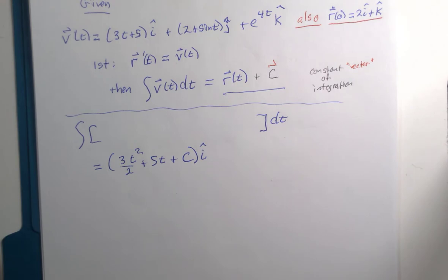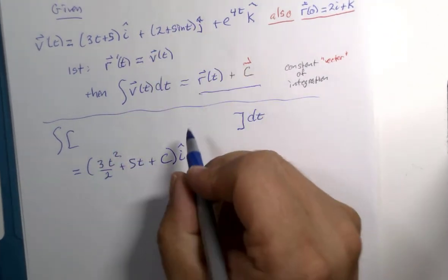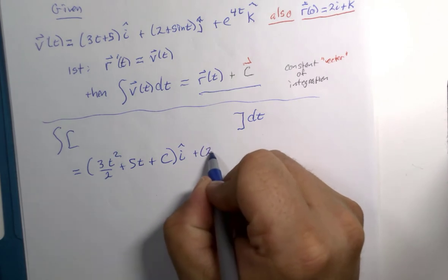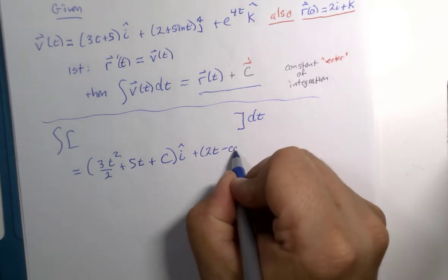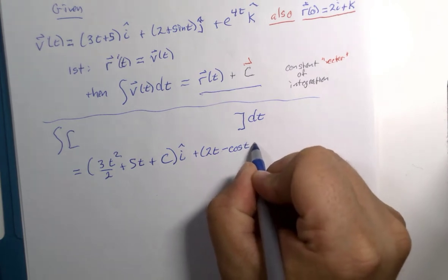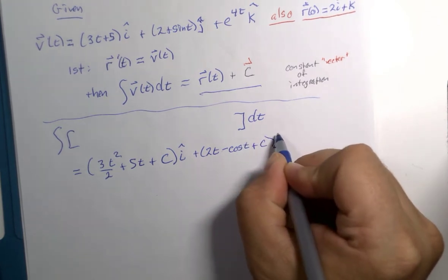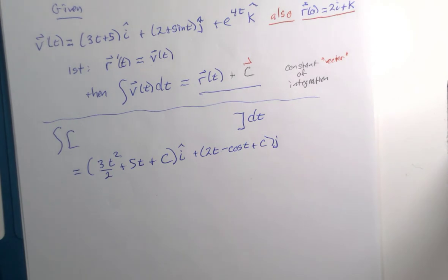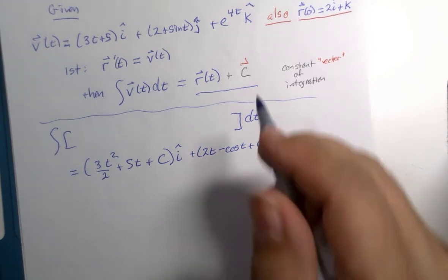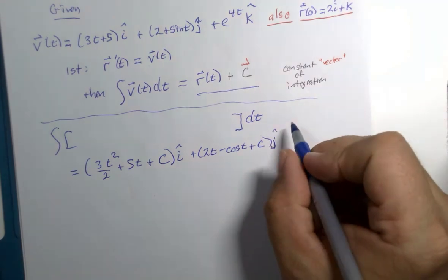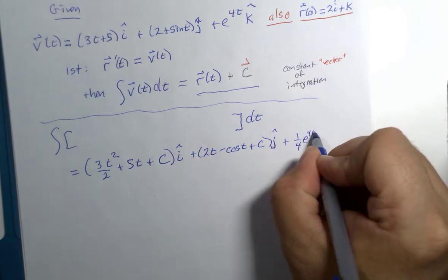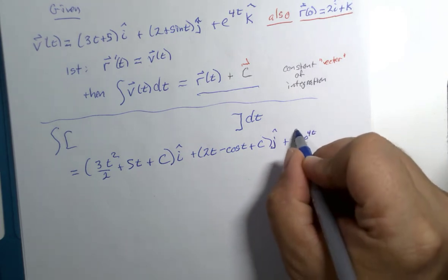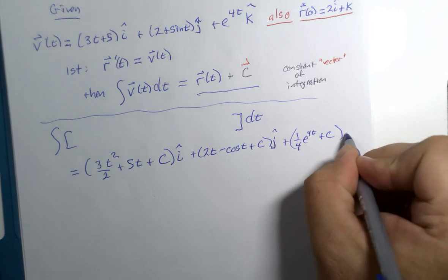You don't have to erase anything though. So the next set of terms, 2t and the integral of sine is minus cosine of t and then a constant there as well. Can you see why sometimes I use component form? It just doesn't fit on the paper. And then finally, 1 fourth e to the 4t and then a constant times k.